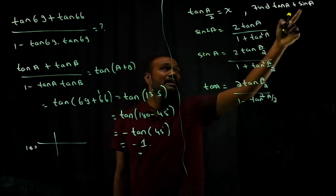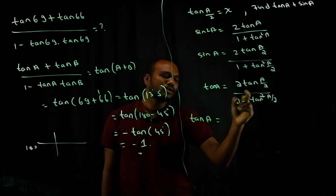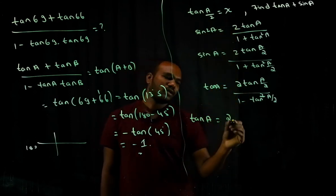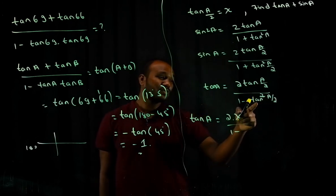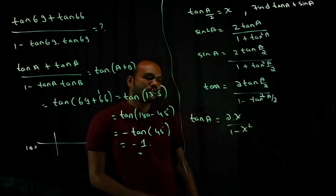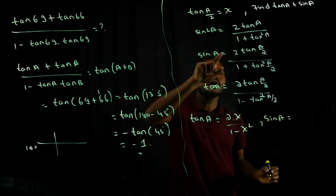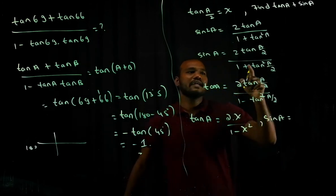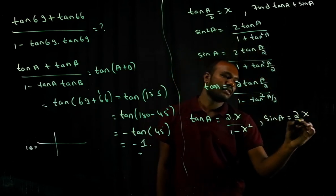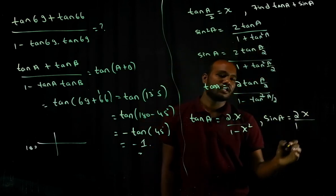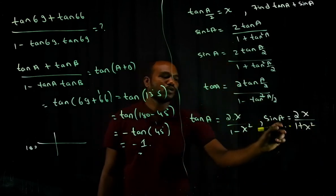tan A = 2x/(1 − x²) and sin A = 2x/(1 + x²). We need to add both: tan A + sin A = 2x/(1 − x²) + 2x/(1 + x²). Taking 2x as common gives 2x × [1/(1 − x²) + 1/(1 + x²)].